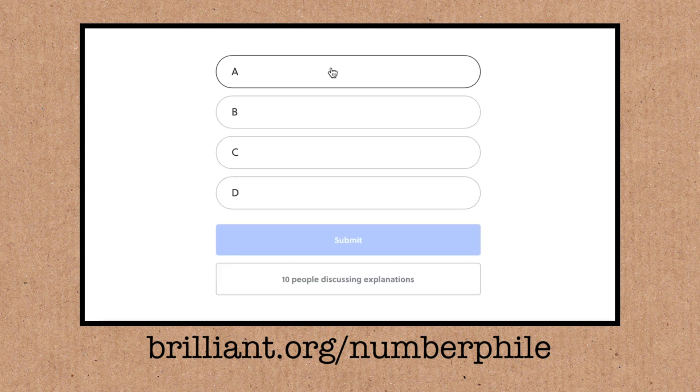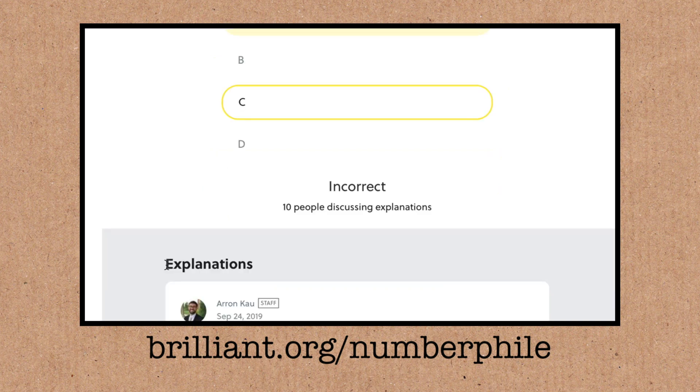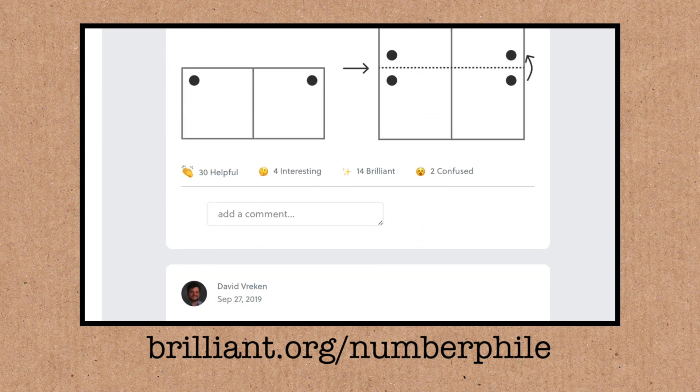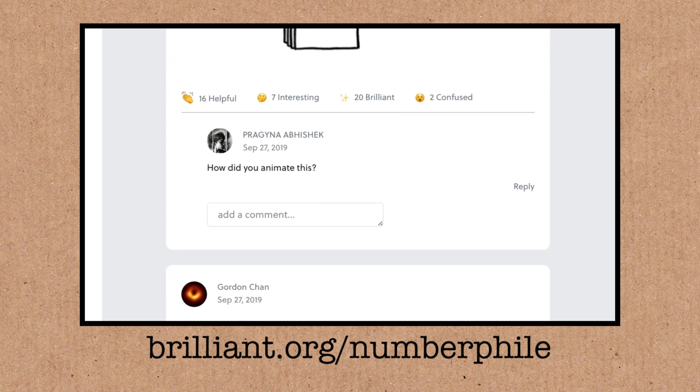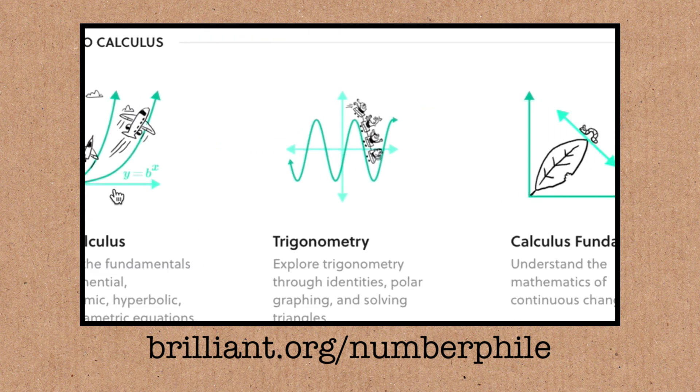I'm going A. Ah incorrect. Anyway that doesn't matter, getting things wrong is what it's all about sometimes on Brilliant. They're not there to judge they're just there to have fun enrich your life. Do check out their courses they've got loads of courses they're adding new ones all the time. Fantastic.